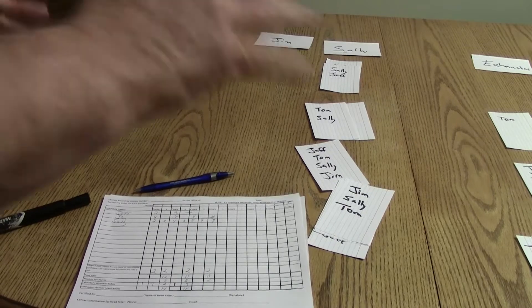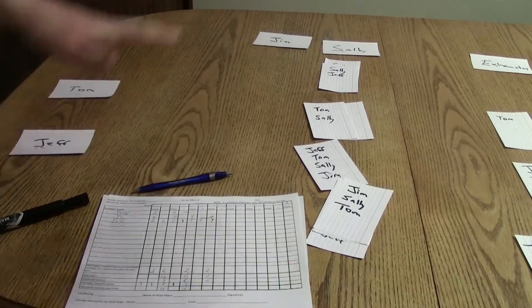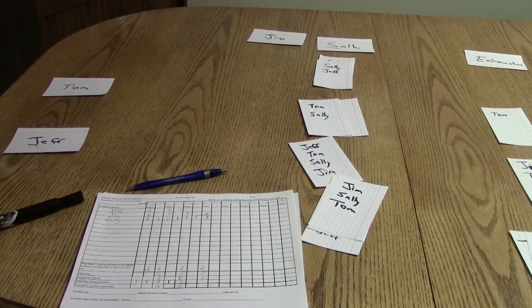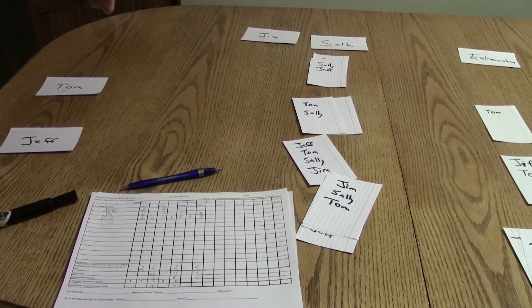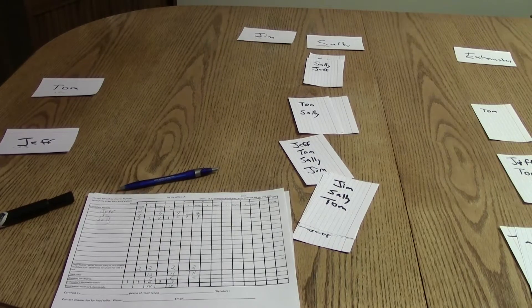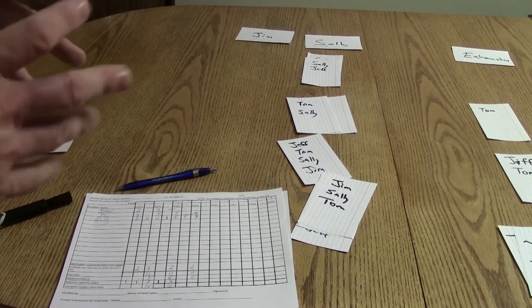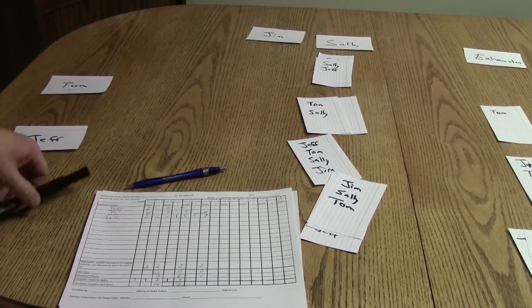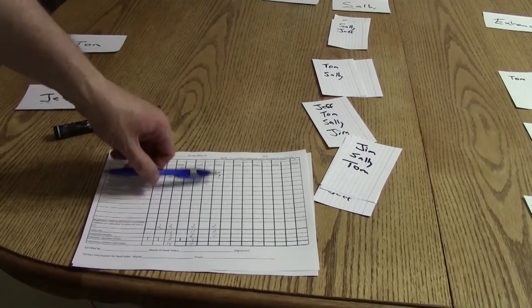So now if we were electing three people, then we would put all the cards back to where we started, all the ballots back to where we started. We would eliminate Tom, put his votes out, and then we would also eliminate Sally. And then we would see between Jeff and Jim, who would be the next person to be elected, again by a majority.